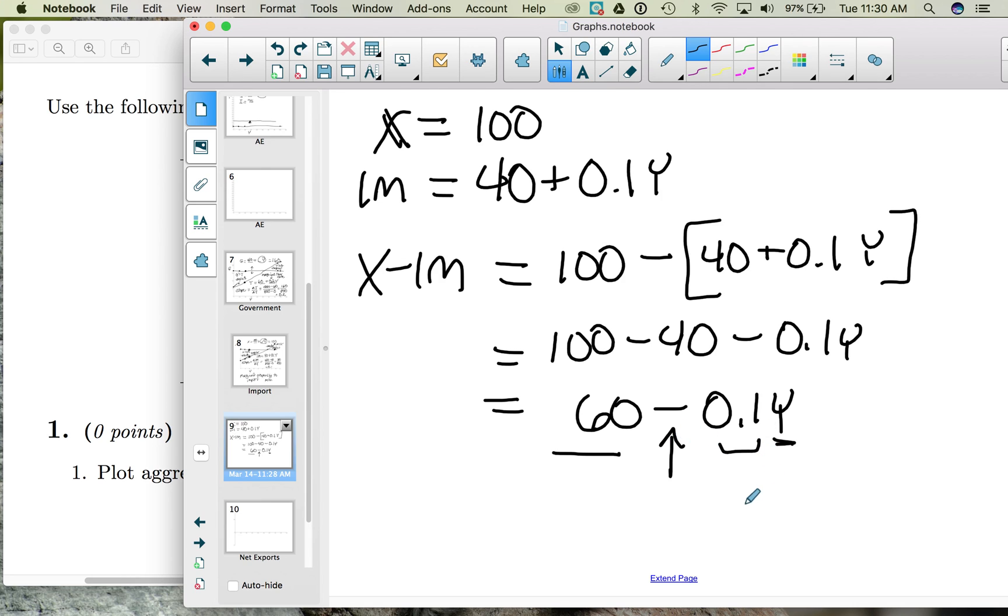This 0.1 that you see here is the MPM. It's just negative now. Why is it negative? Well, for every dollar of income, we are importing 10 cents worth, and that 10 cents is leaving our country.